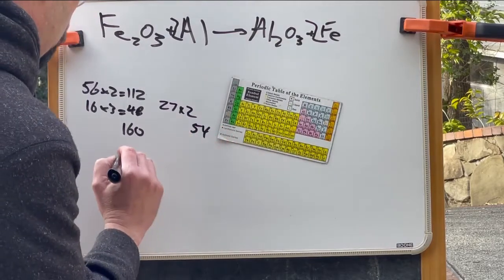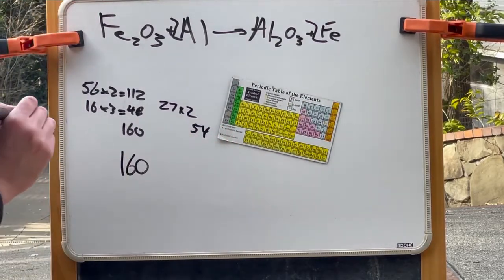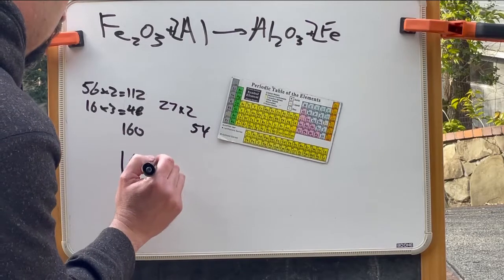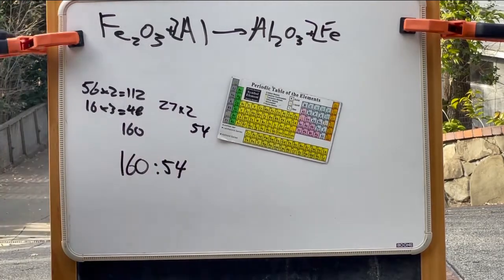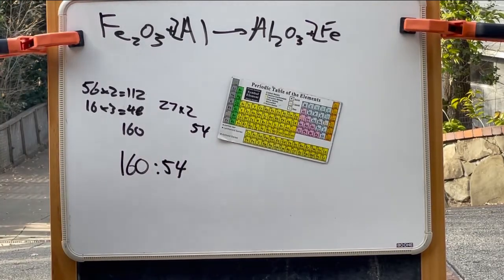The atomic weight of aluminum is 27 times 2 is 54. So that means that for every 160 units of iron oxide we need 54 units of aluminum. For our purposes this is close enough to a 3 to 1 ratio.